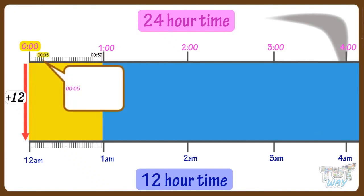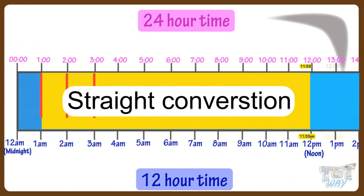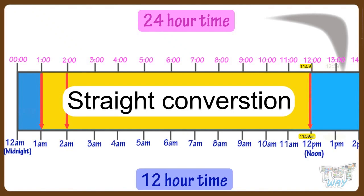If it's 5 minutes past 12 midnight, we add 12 hours to get the time in the 12-hour clock system, giving us 12:05 a.m. Between 1 and 11:59, it is a straight conversion to a.m. — just add a.m. to the time. So 1 o'clock is 1 a.m., 2 o'clock is 2 a.m., and the same is true up to 11:59, which is 11:59 a.m.